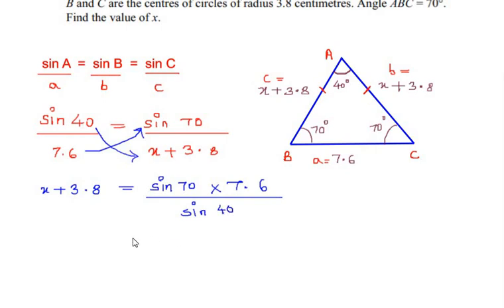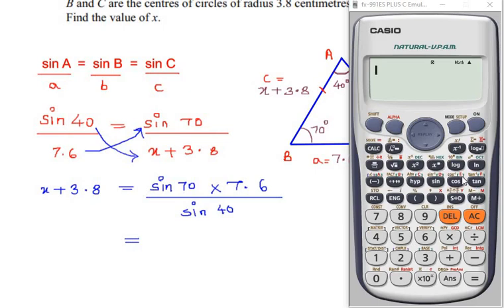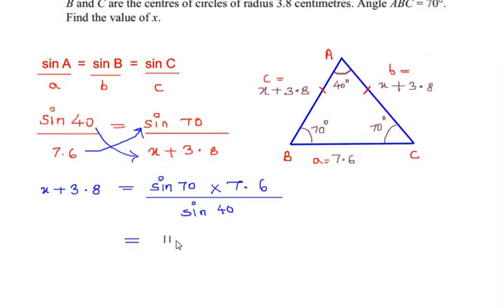Let us solve this right hand side and see what we get. So we have sine of 70 degrees times 7.6 divided by sine of 40 degrees.